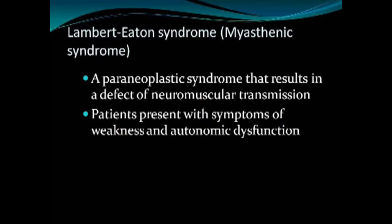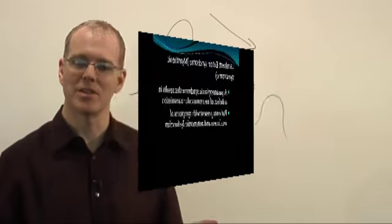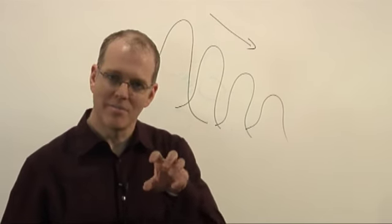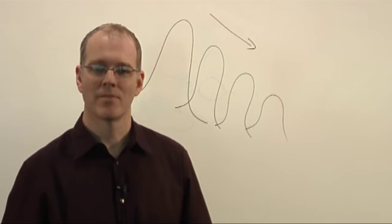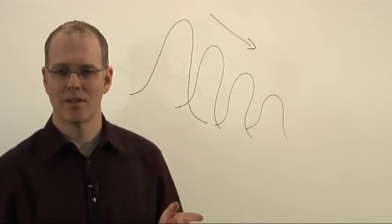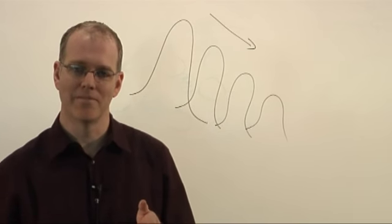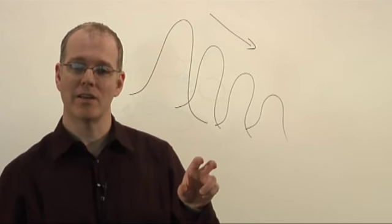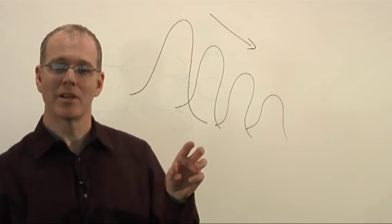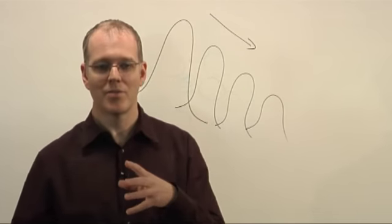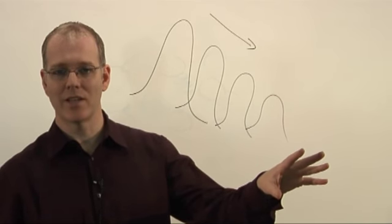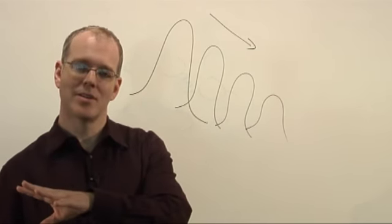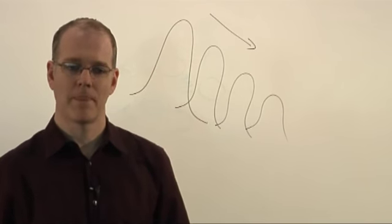Lambert-Eaton syndrome, sometimes known as myasthenic syndrome, is the least common of the three neuromuscular junction disorders. It is a paraneoplastic condition — a secondary remote effect of cancer. Lambert-Eaton is a presynaptic problem: antibodies target the voltage-gated calcium channels, which are important for the release of acetylcholine. Because acetylcholine is not released, nicotinic receptors are not stimulated (producing weakness) and muscarinic receptors are not stimulated (producing autonomic symptoms).